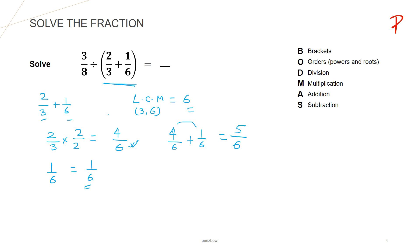So the sum of 2 upon 3 plus 1 upon 6 is equal to 5 upon 6. Now to solve 3 upon 8 divided by the bracket 2 upon 3 plus 1 upon 6, we write 3 upon 8 as it is, then a division sign, and for 2 upon 3 plus 1 upon 6 we substitute 5 upon 6.